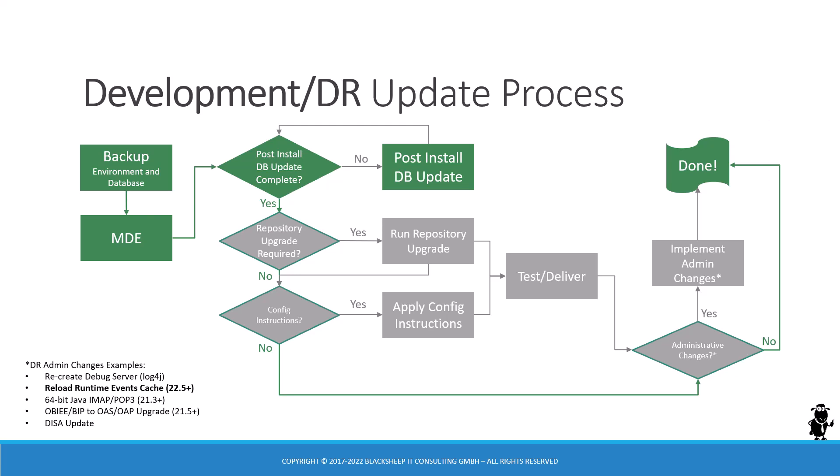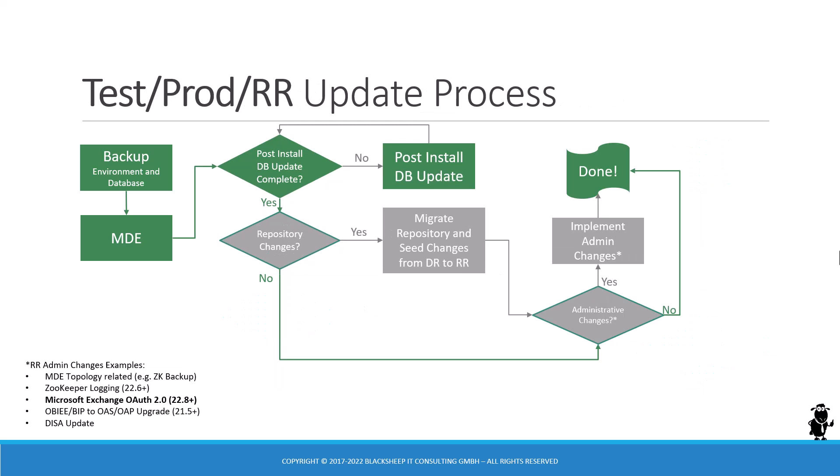If you want to include the OCI AI services integration, then you have to run the repository upgrade successfully. Then you might have some configurations that you also do in the repository, and you test and deliver your repository changes. You might have some administrative changes along the way, depending on the gap you're bridging between your Siebel versions. After implementing any necessary changes on the administrative side, you are done with the development environment. On test and production or RR environments, the process is a little bit shorter — you still have to back up everything.